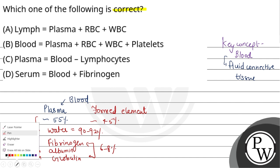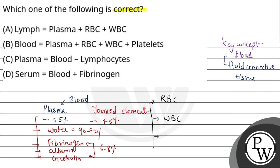If we talk about formed elements, in formed elements we see RBC, WBC, and platelets. This is the composition of formed elements.